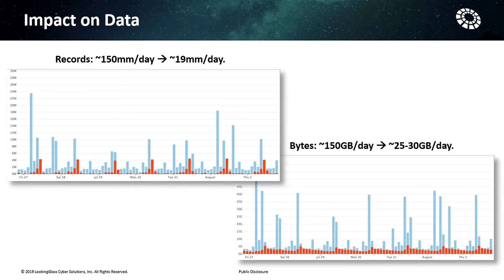A little example: by modeling all the data we ingest, we went from 150 million records a day — which is probably small for some people — down to 19 million records a day just by remodeling the data in the entity-fact assertion capability. We went from 150 gigabytes a day to 25 to 30 gigabytes a day. That might seem small in a single day, but multiply that by 30, by 60, et cetera, and you can hopefully see the problem there.